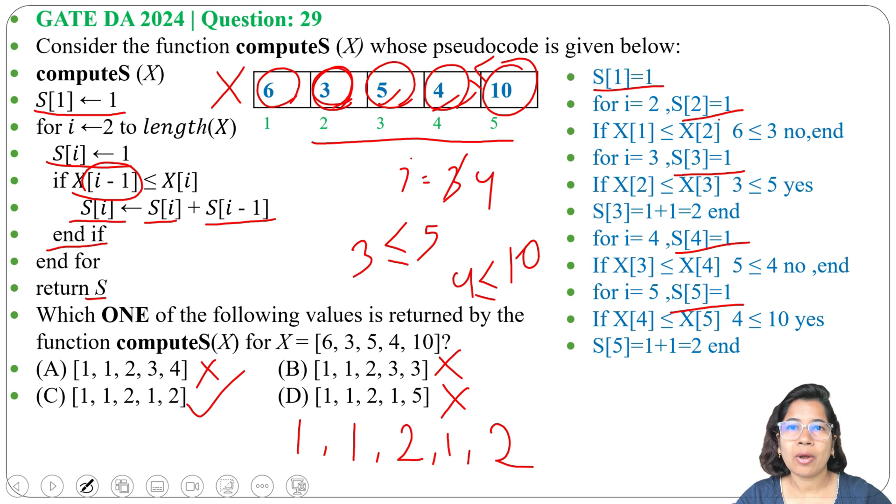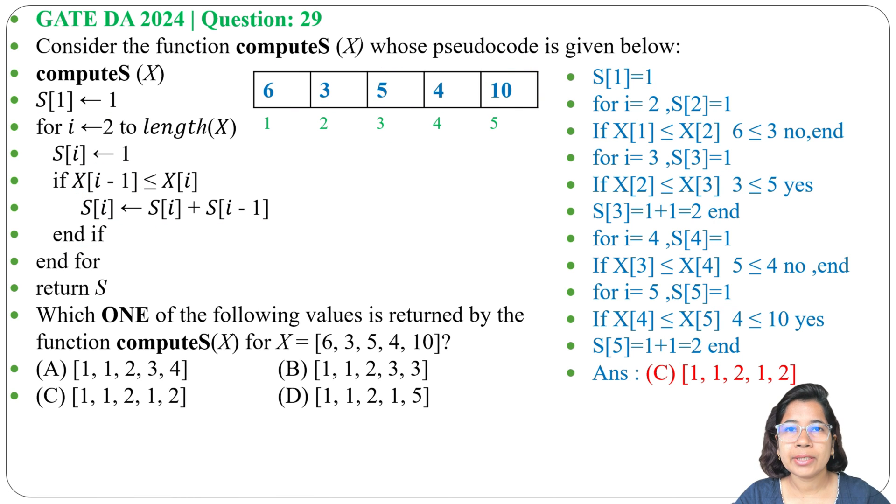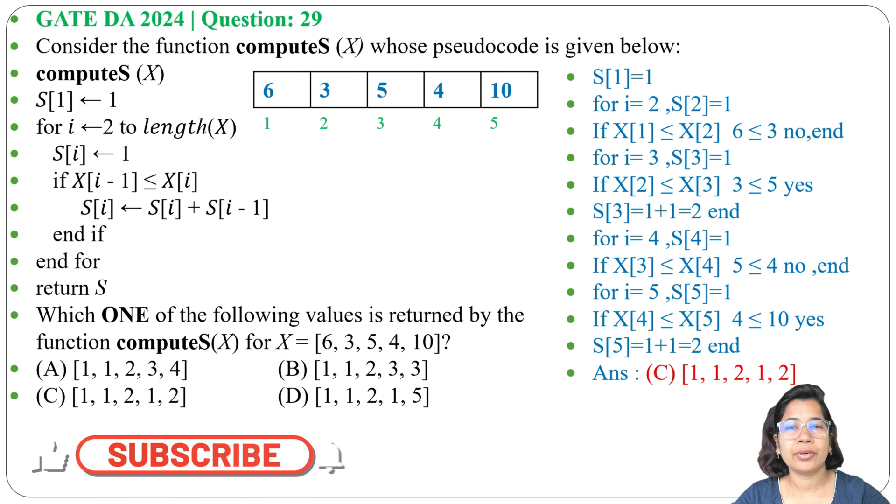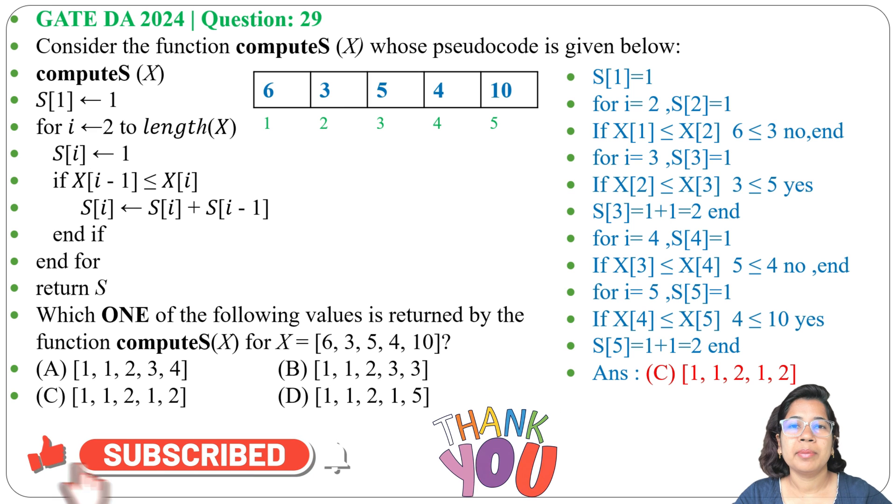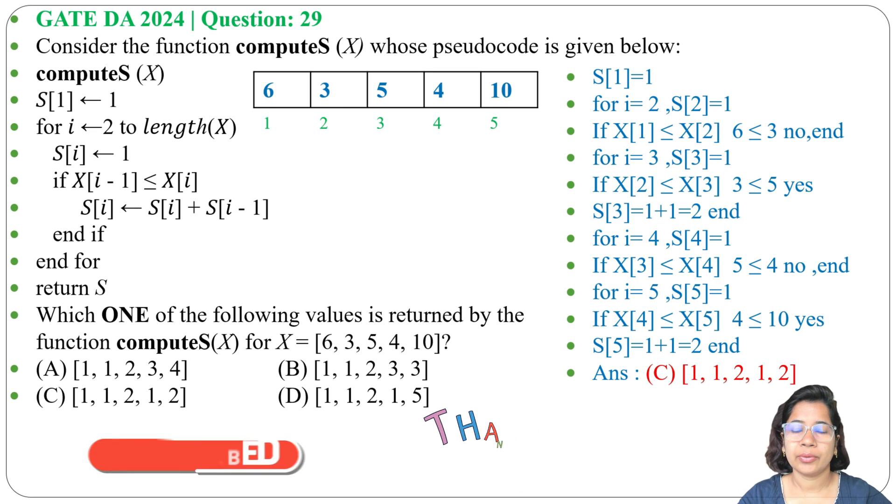So answer will be option C. This is an easy question, just you need to run the pseudocode and you can easily get the answer. If this lecture is helpful for you, please like, share, and subscribe. Thank you.